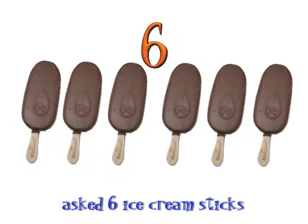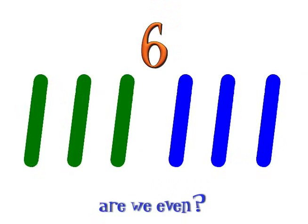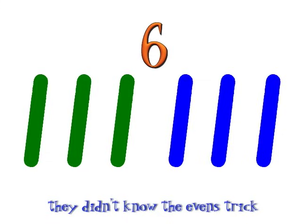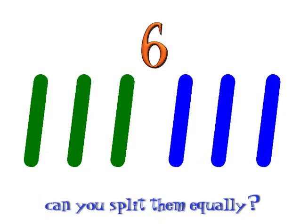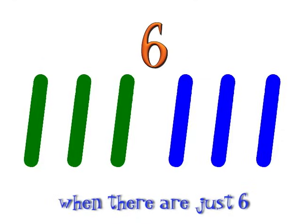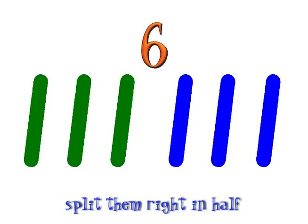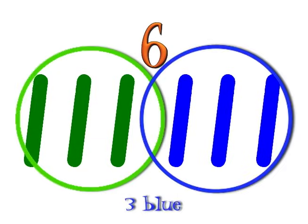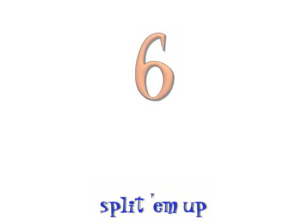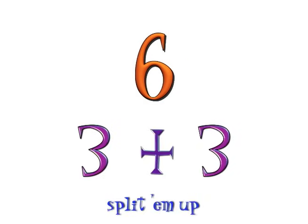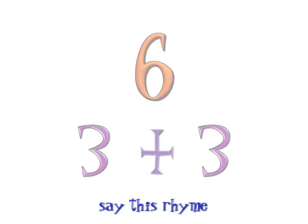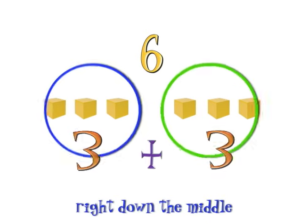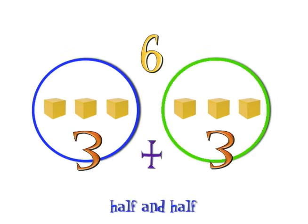Are we even or are we out — as six ice cream sticks? Are we even or are we out? They even know the even, they even know the trick. Can you split them equally when they're all just six? Yes, you can split them right in half — three and three blue sticks. Split them up, even split down the middle. Split them up, even split, say this rhyme.